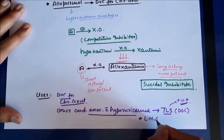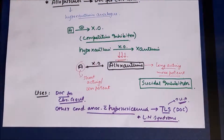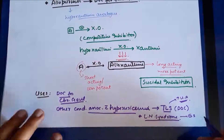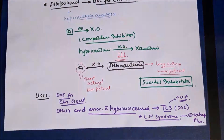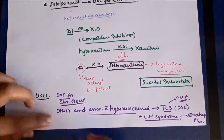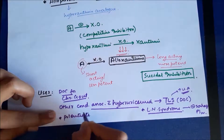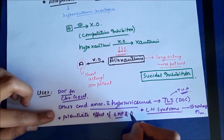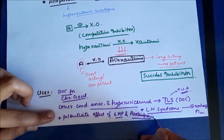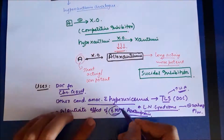Allopurinol can also be used in Lesch-Nyhan syndrome, in which there is a congenital defect in the HGPRT enzyme causing inhibition of the salvage pathway of purine metabolism. It can also be used to potentiate the effect of 6-mercaptopurine, an anti-cancer drug, and azathioprine, an immunosuppressant.